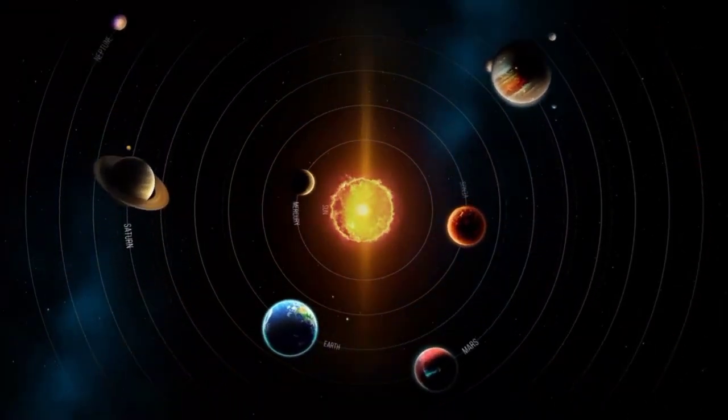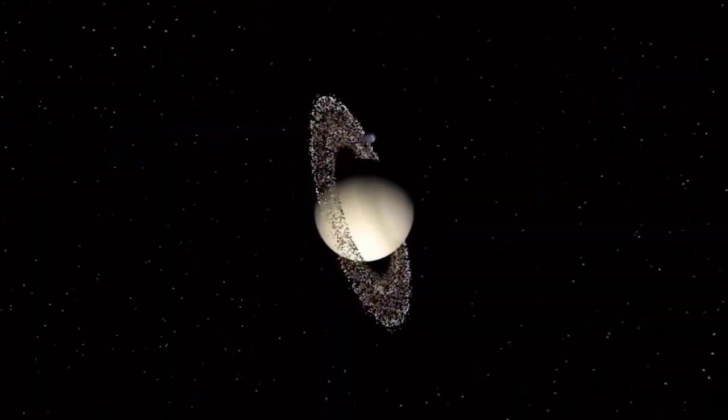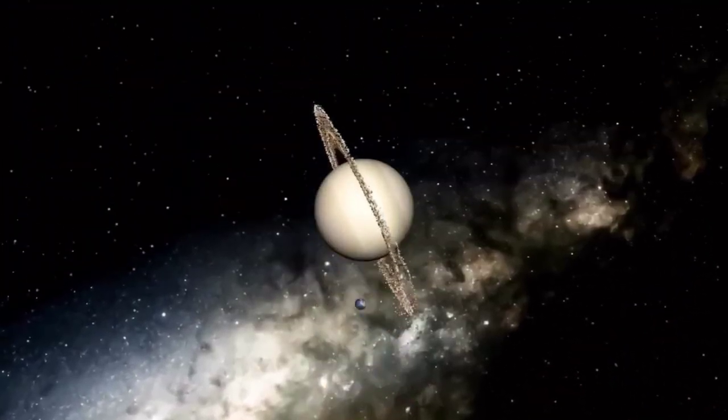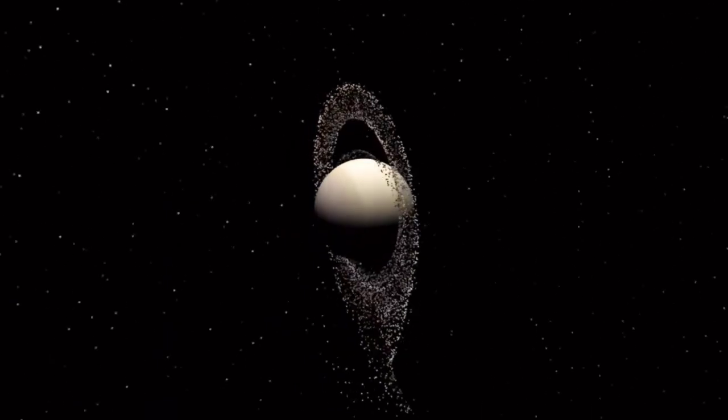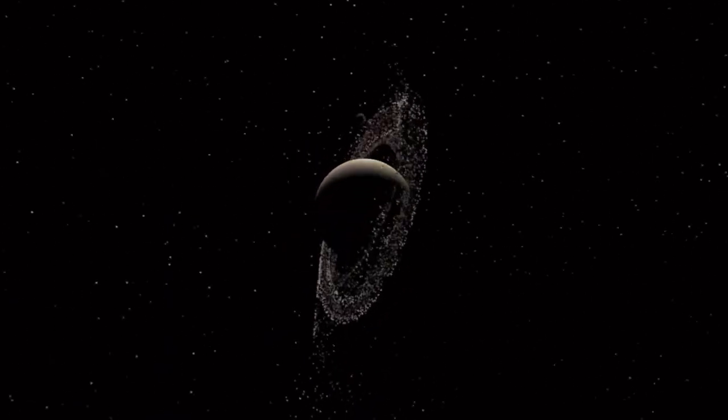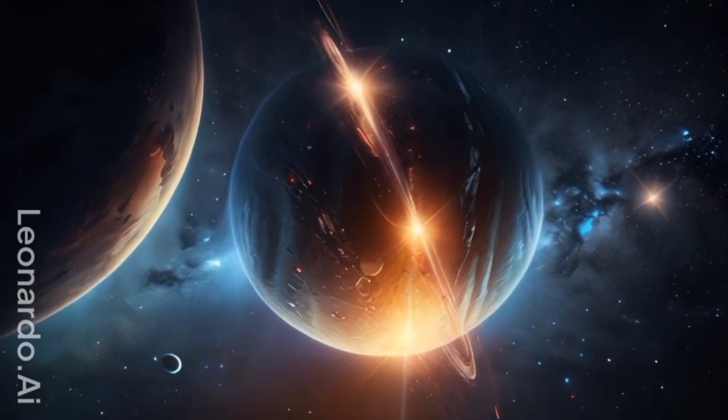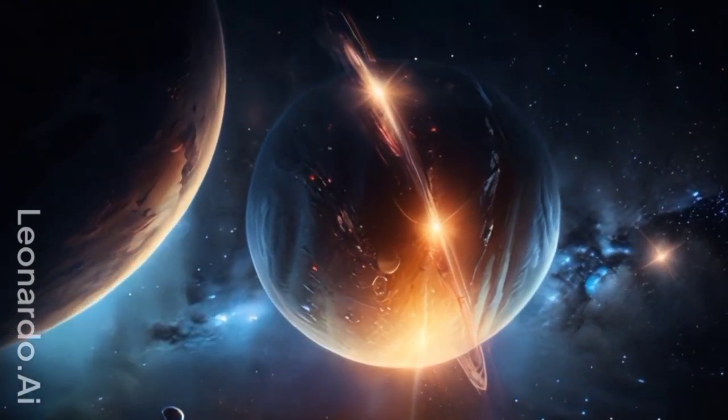Pluto's journey around the Sun is unlike that of any other planet in our solar system. It takes a staggering 248 years to complete a single orbit. Since its discovery in 1930, Pluto has not yet completed one full revolution.